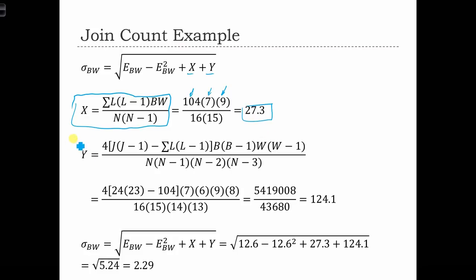This is the formula for y. Again, it looks horrifying, but it's really not so bad. We're just going to plug in all the numbers. So the number of joins is 24 times 23, joins minus 1.